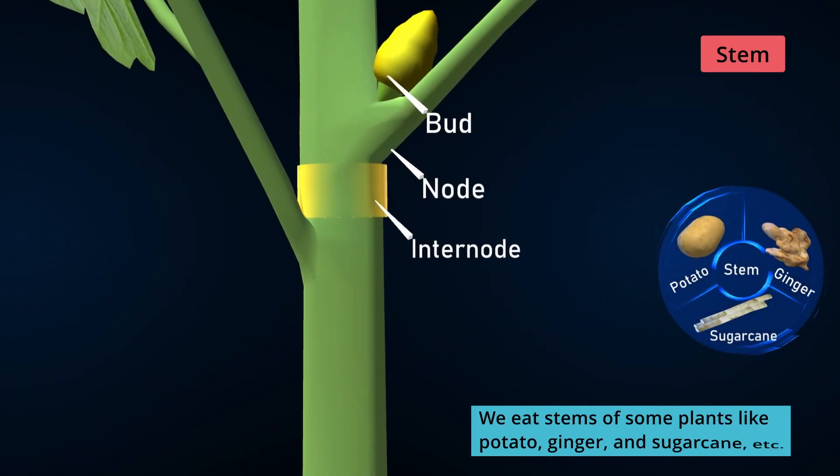We eat stems of some plants like potato, ginger, and sugarcane.